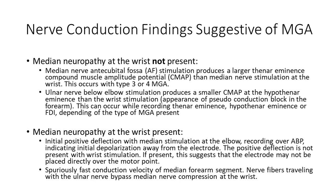Alternatively, in a patient with a median neuropathy at the wrist, nerve conduction studies when recording the abductor pollicis brevis at the thenar eminence may show an initial positive deflection when stimulating the median nerve at the elbow. This positive deflection reflects initial depolarization somewhere away from where the recording electrode is. This positive deflection would not be expected to be present with the wrist stimulation. A spuriously fast conduction velocity of the median forearm segment may also be detected, as the median nerve fibers traveling with the ulnar nerve are bypassing the focal compression occurring at the wrist. Ulnar nerve studies would not be expected to be affected if the patient has a median neuropathy at the wrist.